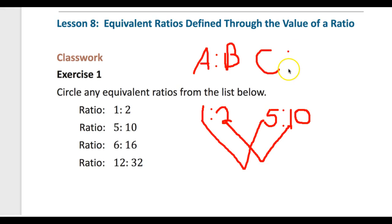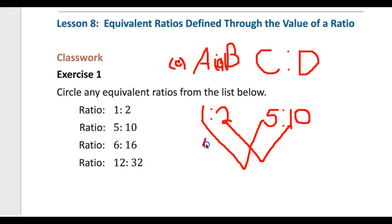So a times a lowercase c will equal the capital C, and b times that same lowercase c will equal d, as long as these two constants are the same. What times 1 gives me 5? Obviously that's 5. Now, if 2 times 5 equals 10, we have an equivalent ratio. Two times five does in fact equal ten, so as long as the multiplier is the same constant, we have an equivalent ratio. So our first two equivalent fractions are one-half and five-tenths.